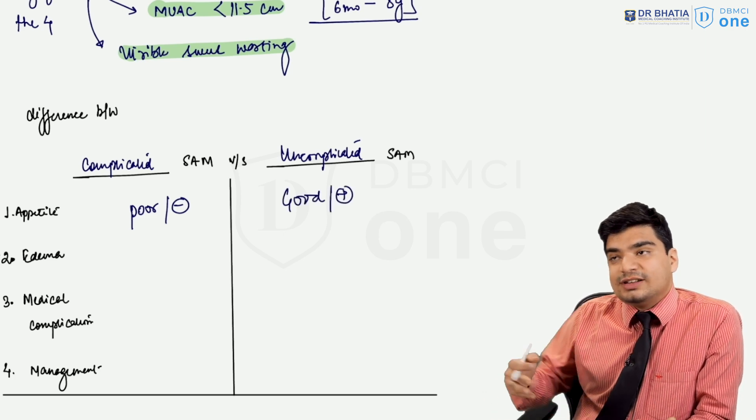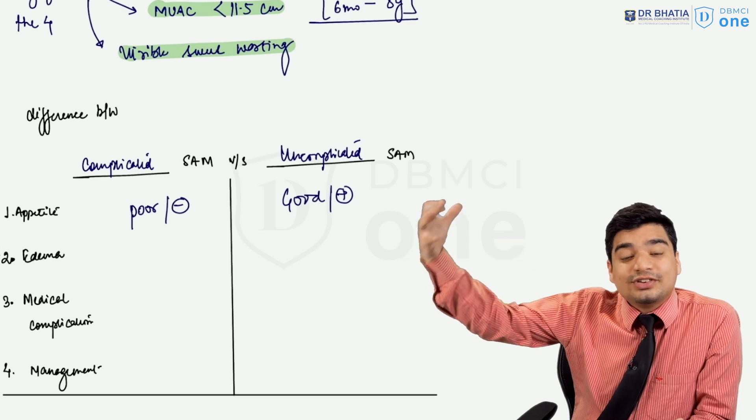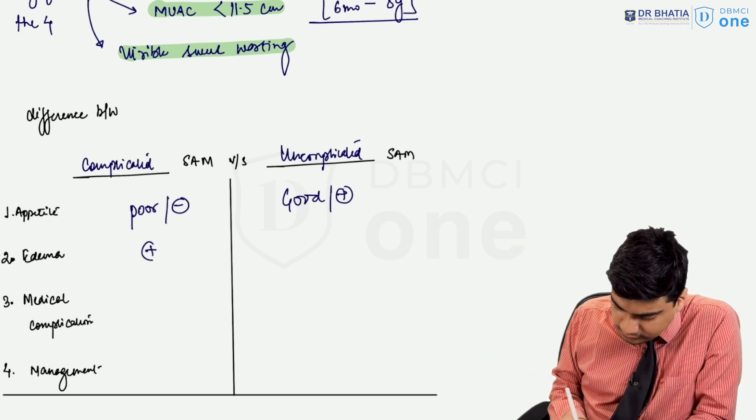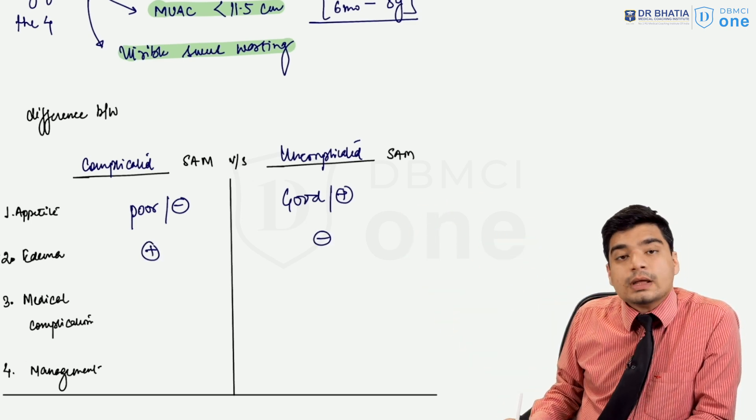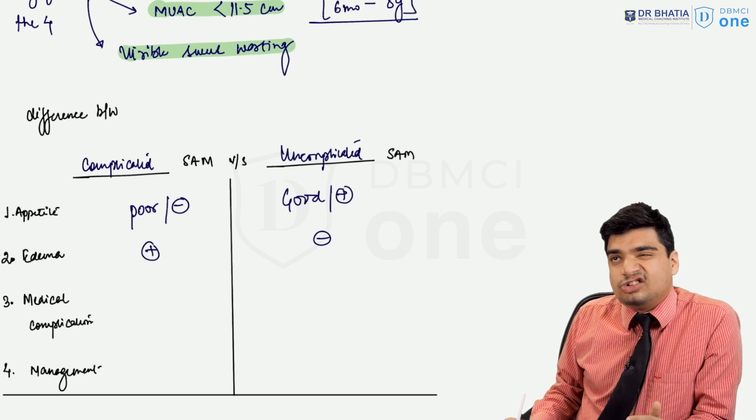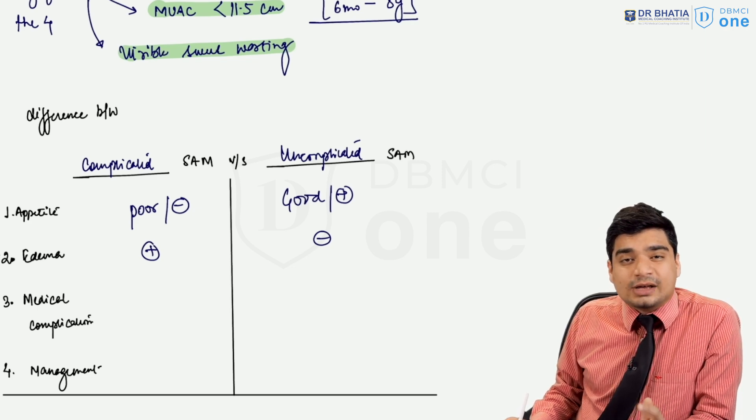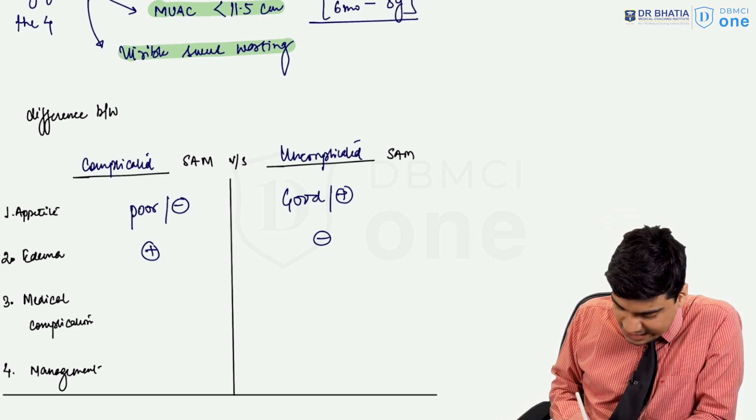In complicated SAM, obviously it's going to resemble the worst form of the disease. Edema can be present while it is absent in uncomplicated SAM. Medical complications—infections, hypoglycemia, hypothermia—all these medical complications are absent as far as uncomplicated SAM is concerned and they're present in complicated SAM.